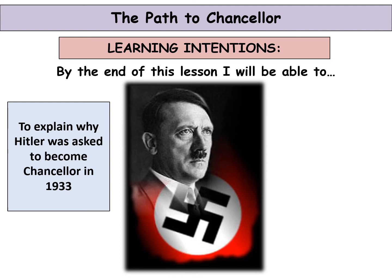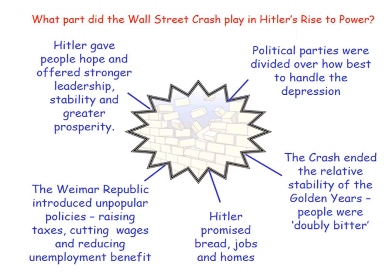Hello National Five Historians and welcome to our next lesson in our Hitler and Nazi Germany topic. In this lesson we are thinking about how Hitler used the popularity we were talking about in previous lessons to enable him to become Chancellor of Germany. Your learning intention is to explain why Hitler was asked to become Chancellor in 1933 and to think about the events that led up to this. Put a note of the title in your notes and continue the lesson.